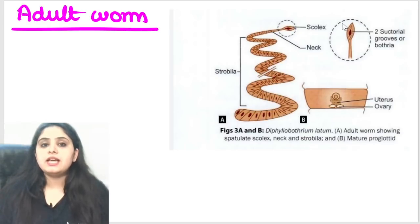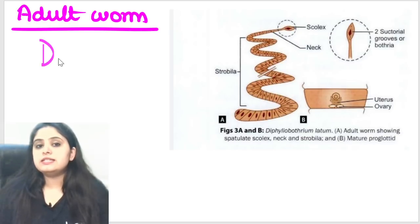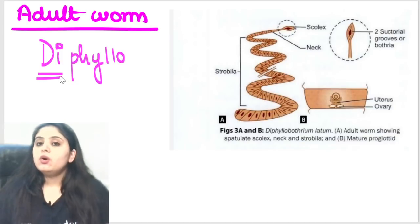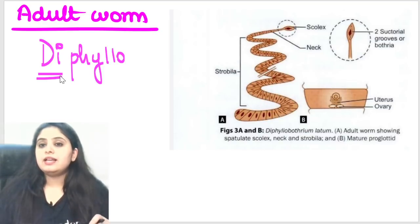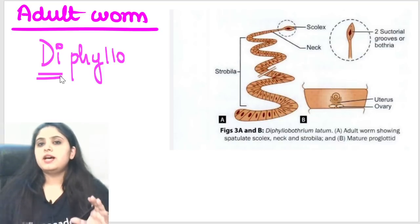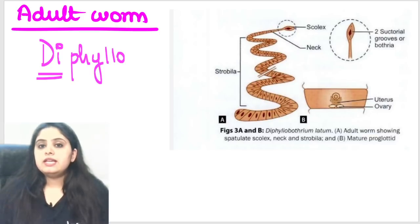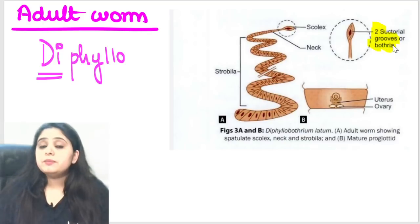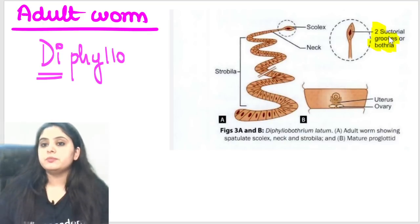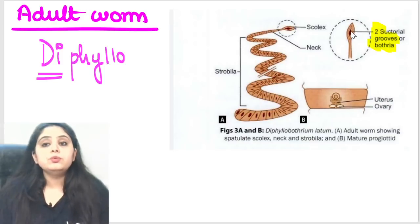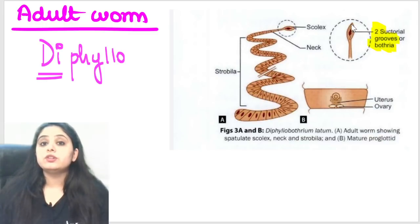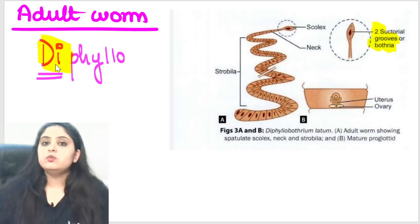Why is it called Diphyllobothrium? All cestodes have suckers and hooklets on their anterior end, but this one is different — it has two grooves, or bothria, on the anterior end. That's why it's called Diphyllobothrium: 'di' for two, 'bothrium' for groove. It uses these two grooves for attachment rather than suckers or hooklets.